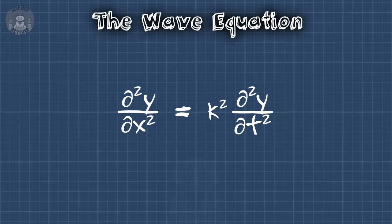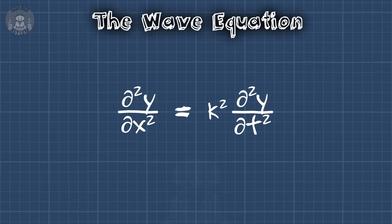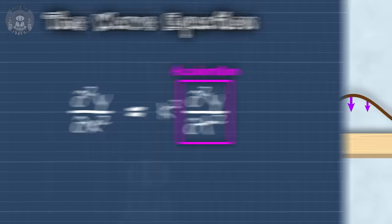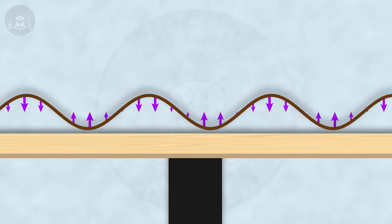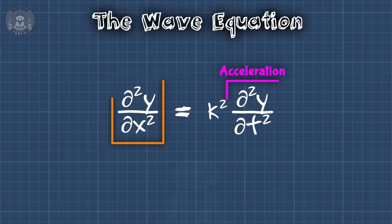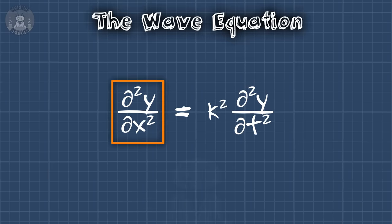Written in its full form, the wave equation is a lot to look at. But this big fraction here — that's just the acceleration. There's one of those at every point along the string. So you might be wondering about this other fraction over here.